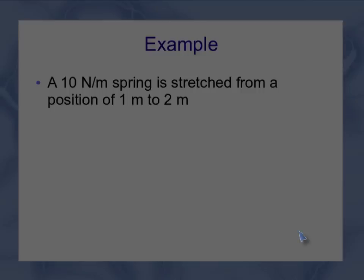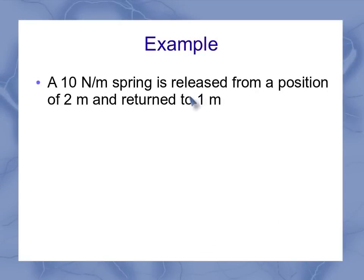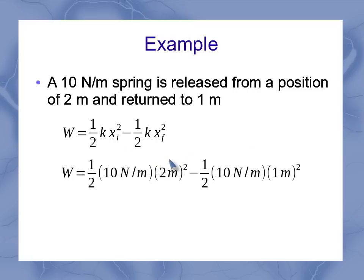If instead, I looked at a spring which was released from 2 meters, and it returned to 1 meter, that's going to have exactly the same equation, but now I'm going to flip my final position and my initial position. So the 2 meters is my initial, and the 1 meter is my final. And in that case, I'd get a positive 15 newtons per meter. So as it moves from 2 meters to 1 meters, the spring force is doing positive work, adding some energy into the system.